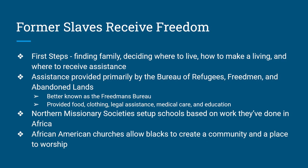The Freedmen's Bureau's full title is the Bureau of Refugees, Freedmen, and Abandoned Lands. Its job was to provide some medical care, education, help with contracts, food, clothes, and shelter. What the Freedmen's Bureau couldn't do, Northern Missionary Societies came in and completed. The Northern Missionary Societies' primary job was to set up black churches — to provide a place where former slaves could create their own community space, worship, and eventually develop their own community leaders.